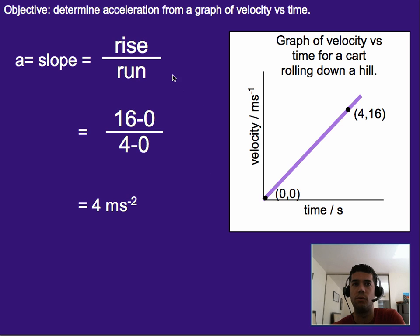To calculate it, what we would do is plug in and literally just figure out the slope. In this case, it would be 16 minus zero for the rise - that tells us how high up it went - and four minus zero for the run, which basically just tells us how far to the right it went.